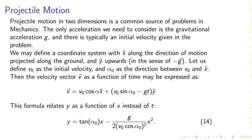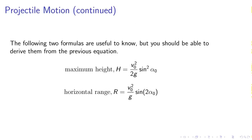Projectile motion is a common source of problems in mechanics. We can imagine a coordinate system with X along the direction of motion on the ground, Y upwards. The gravitational acceleration is pointing down. Then you have V equals V naught cosine alpha, and so forth. For projectile motion, the following two formulas are useful to know, but you should be able to derive them from the previous equation. You have a maximum height and a horizontal range which can be derived.